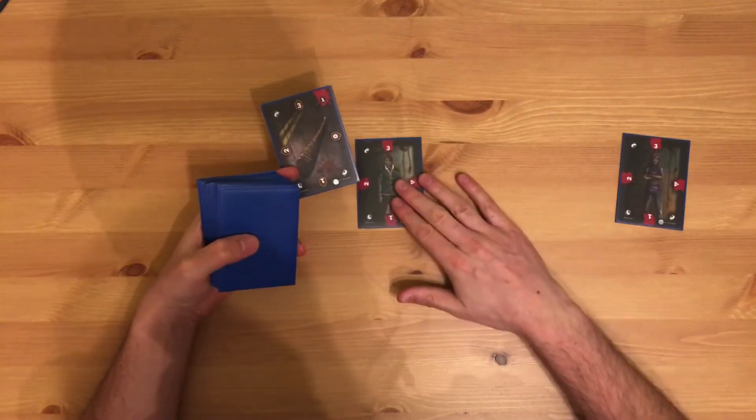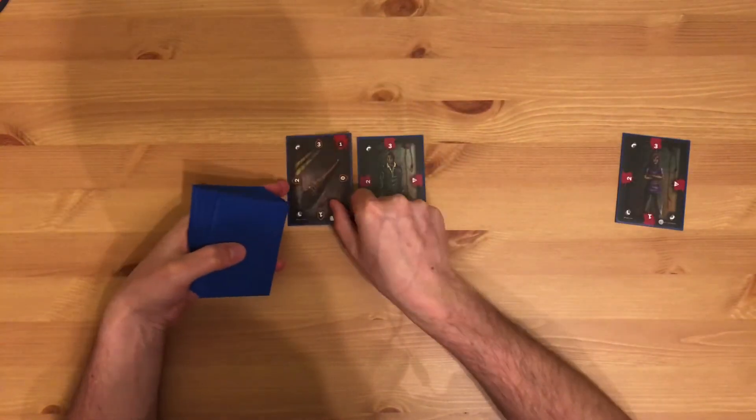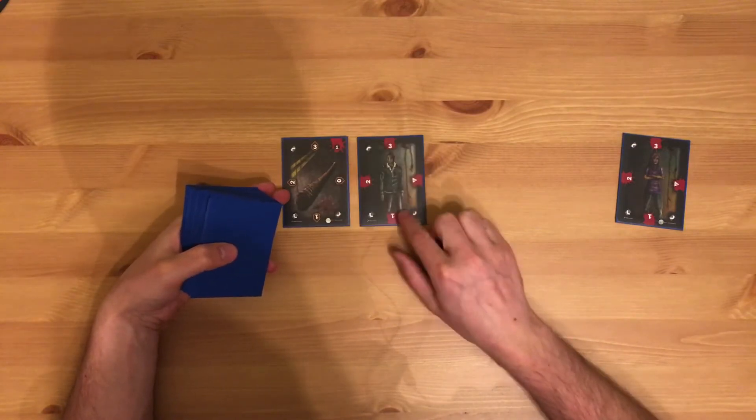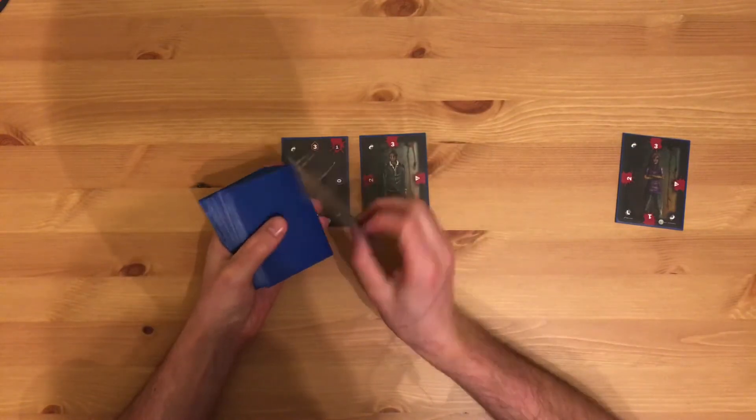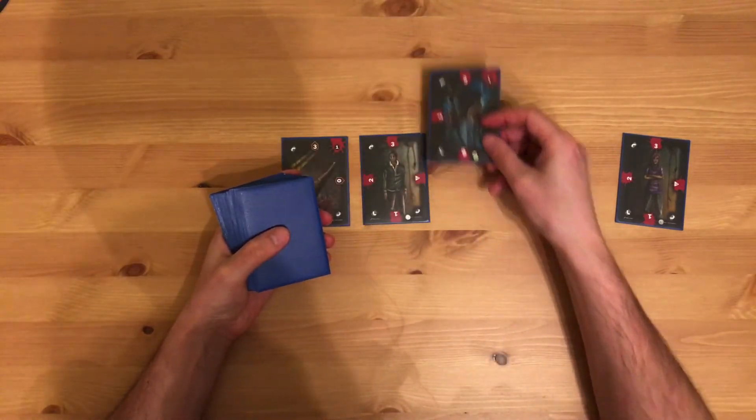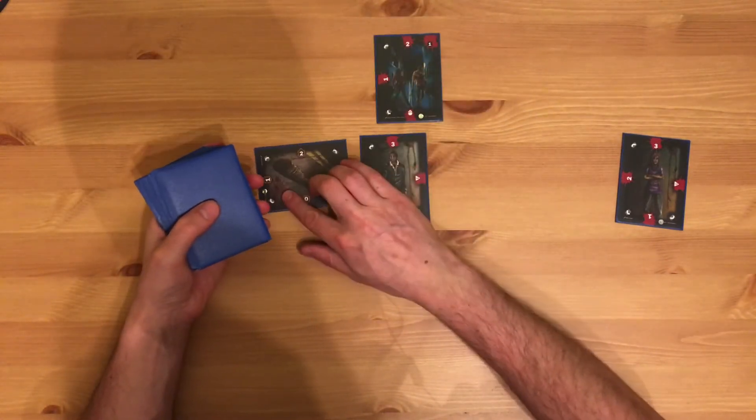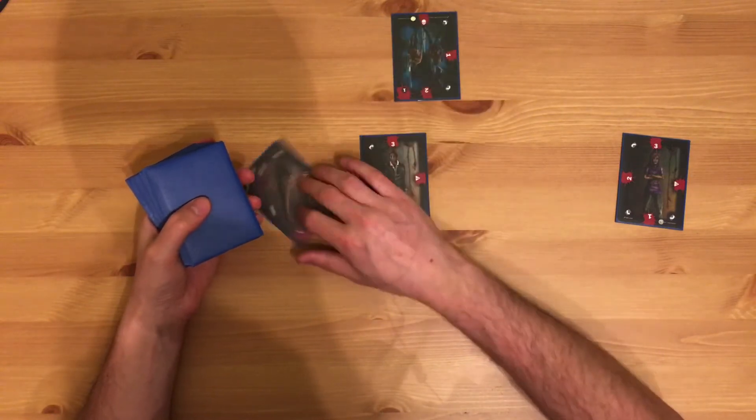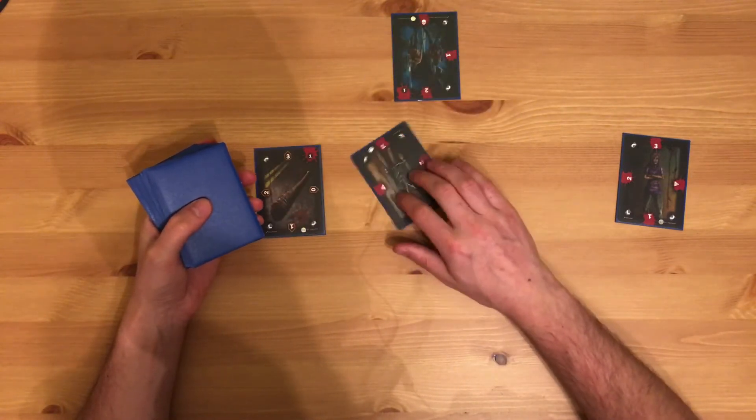So I'm playing as this character here. I can equip the bat and it's got a number of uses. It does 1 damage and at the moment I'm on 3 health. If I draw into a zombie, I have to resolve that either by utilizing my weapons or if I don't, then I rotate my health down.